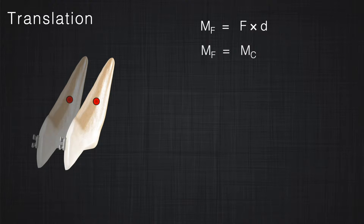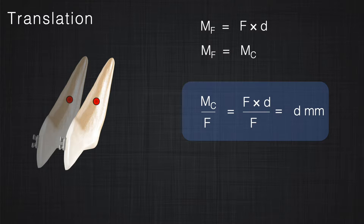Even though translation and rotation occur simultaneously, for simplicity we separate them in our examples. What was the couple to force ratio in this system? The couple magnitude equaled the moment of the force, which was F times d. So the couple to force ratio becomes F×d divided by F, which equals d — the distance between the force and the center of resistance. Therefore, any time the ratio between the couple and the force equals d, we can produce pure translation without any rotation.